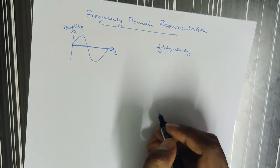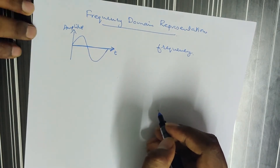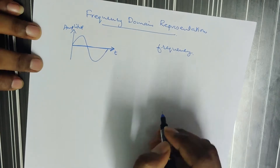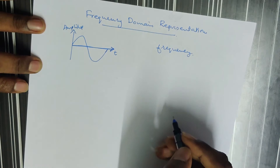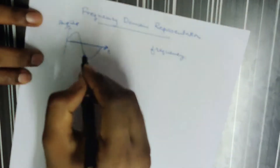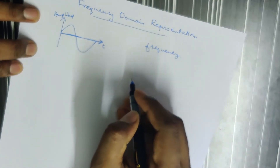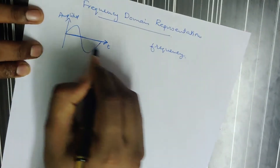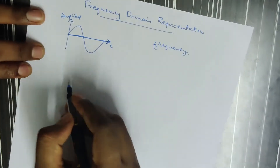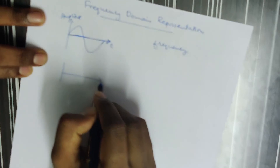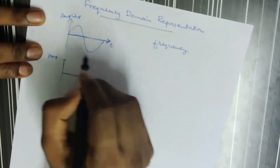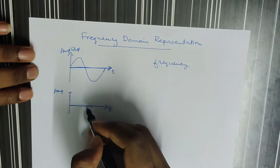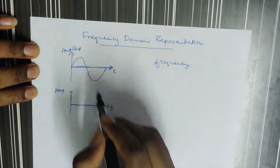This is Frequency Domain Representation. I will represent the same sine wave in the frequency domain. Here, the X-axis is the frequency and the Y-axis is the amplitude.